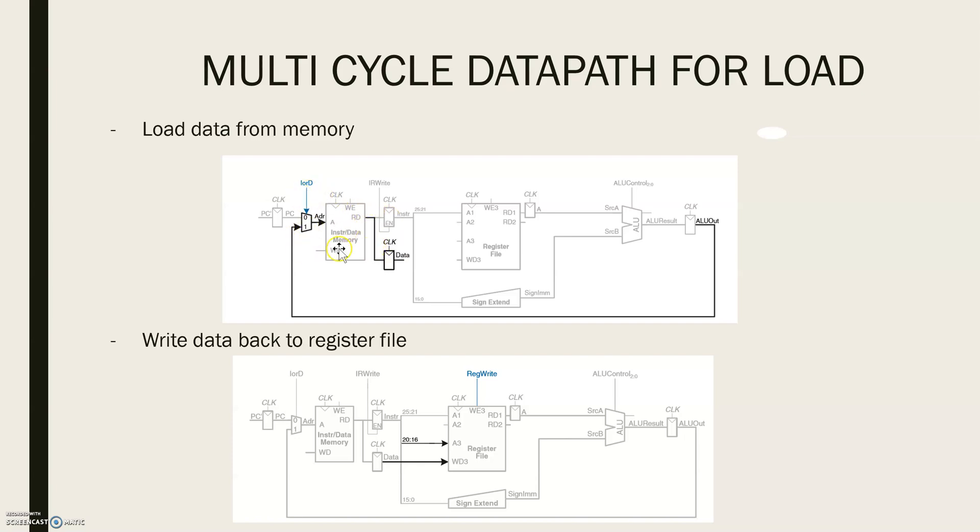Notice that the address multiplexer permits us to reuse the memory during load instruction. On the first step, address was taken from PC to fetch the instruction. On a later step, address is taken from ALUOut to load the data. So hence IorD must have different values during different steps.